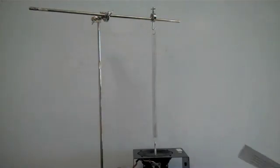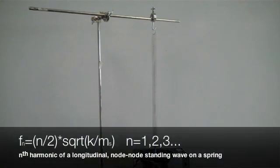And that works the same as standing waves on a string. And so you end up with an equation that's the nth harmonic is equal to n over 2, the frequency, rather, of the nth harmonic is equal to n over 2 times the square root of k over the mass of the spring.